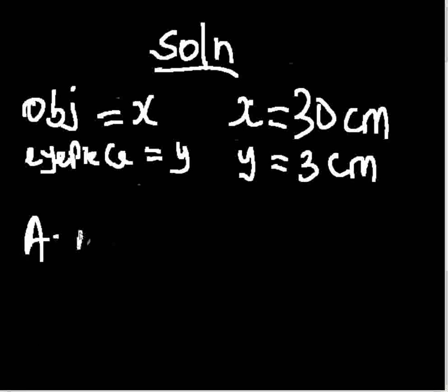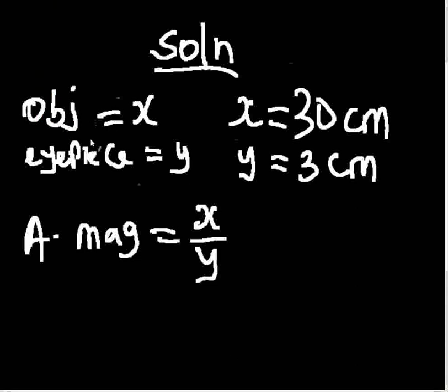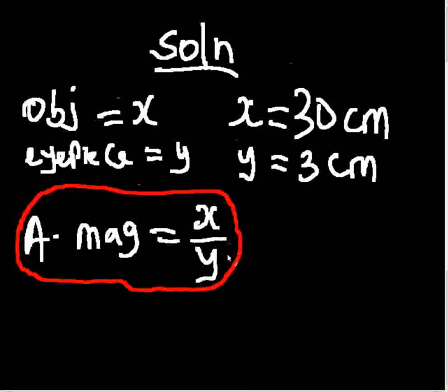Our angular magnification is equal to the ratio of X to Y, so we have X all over Y. This is the formula that will enable us to get the angular magnification.